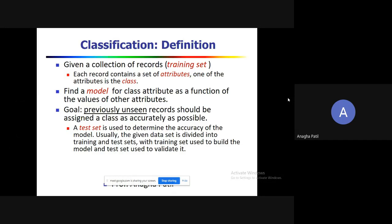In classification, we find a model for the class attribute as a function of the values of the other attributes. The class label is a function of the rest of the attributes in the dataset. The goal is to assign a class label to previously unseen records as accurately as possible. Once a classifier is built, any new observation provided is classified into one of the class labels.